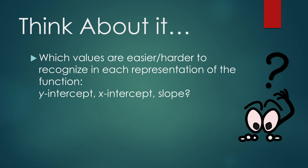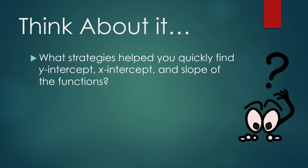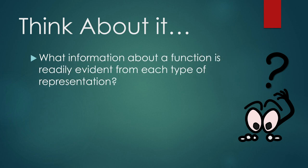Questions to think about during or after gameplay could be: Which values are easier or harder to recognize in each representation of the function? What strategies helped you quickly find y-intercept, x-intercept, and slope of the functions? What information about a function is readily evident from each type of representation?